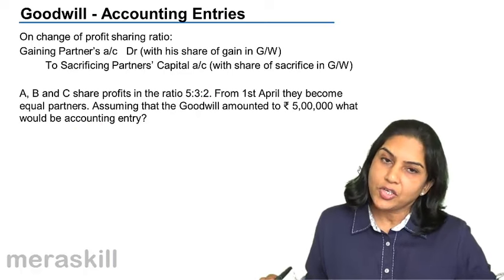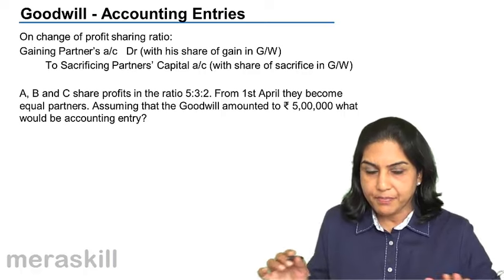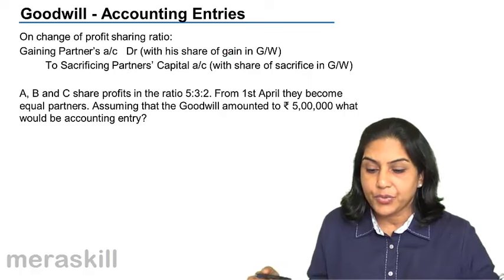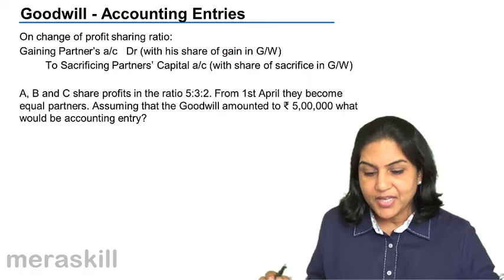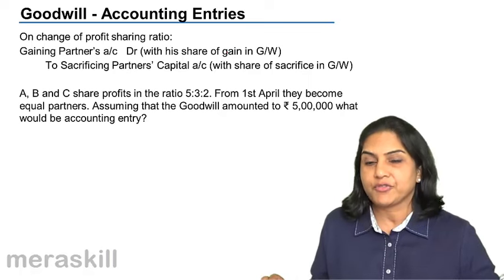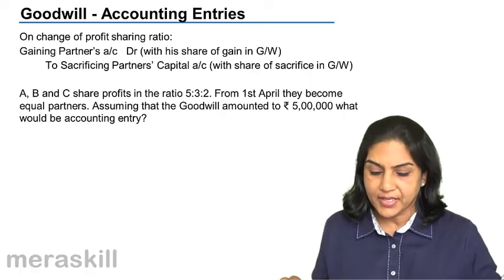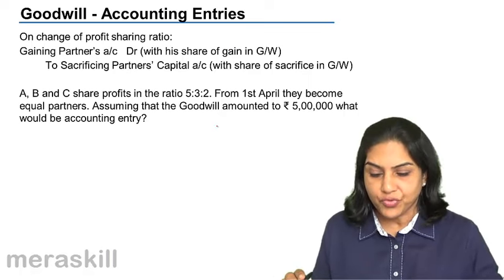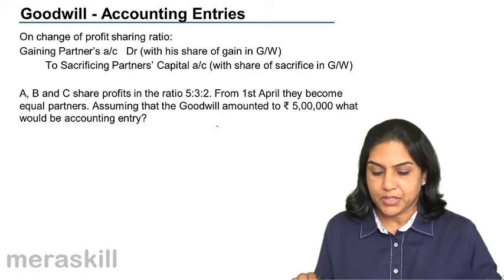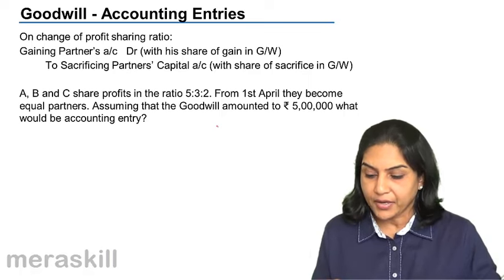Accounting entries on change of profit sharing ratio follow the same principle. The gaining partner's account is debited with his share of gain in goodwill, and the sacrificing partner's capital account is credited with their share of sacrifice in goodwill. Example: A, B and C share profits in the ratio 5:3:2. From 1st April, they become equal partners. Assuming that goodwill amounted to 5,00,000, what would be the accounting entry?